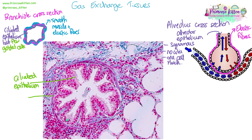The folding allows the bronchiole to cope with stretching and expansion. Then there is the smooth muscle ring layer around the outside — you can see it goes all the way around with those flattened cells that make up the smooth muscle. There are goblet cells within the ciliated epithelium layer, though we can't necessarily distinguish them at this magnification.